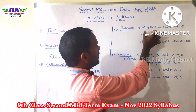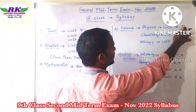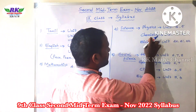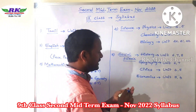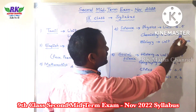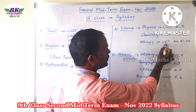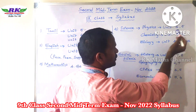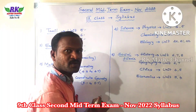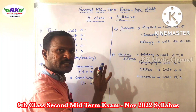Next, Science. Physics — unit 4 and 5. Chemistry — unit 13 and 14. Biology — unit 20, 21, and 22. This is the Science syllabus.